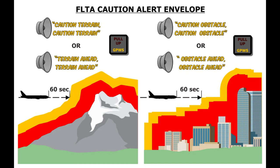TAWS A and TAWS B. There are presently two classes of certified terrain awareness and warning systems: TAWS A and TAWS B. A TAWS A system provides indications for the following potentially hazardous situations: excessive rate of descent; excessive closure rate to terrain; altitude loss after takeoff; negative climb rate; flight into terrain when not in landing configuration; excessive downward deviation from glide slope; premature descent; and terrain along future portions of the intended flight route. A TAWS B system provides indications of imminent contact with the ground in three situations: excessive rate of descent; excessive closure rate to terrain, per advisory circular AC 23-18, to 500 feet above terrain; and negative climb rate or altitude loss after takeoff.